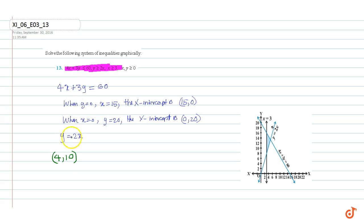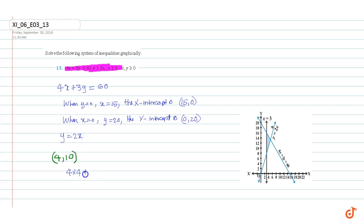We check in which part of the line the point (4, 10) lies. For the first inequality, 4x plus 3y less than or equal to 60: substituting (4, 10) gives 4(4) plus 3(10) equals 46, which is less than or equal to 60. This is true. So the feasible region lies in this direction from the line 4x plus 3y equals 60.